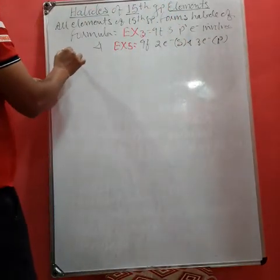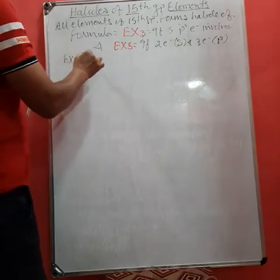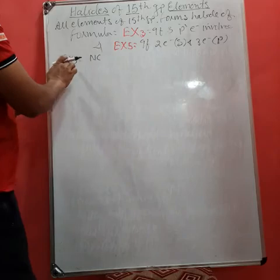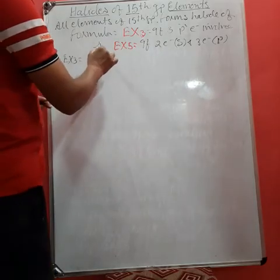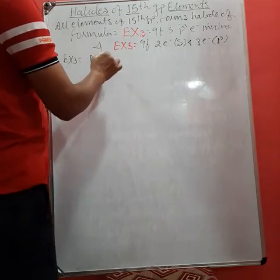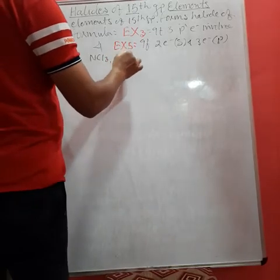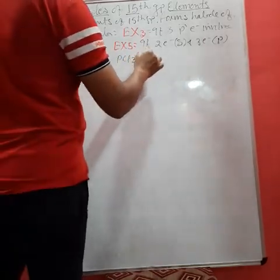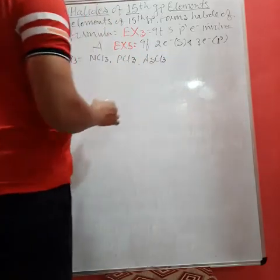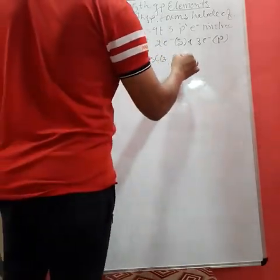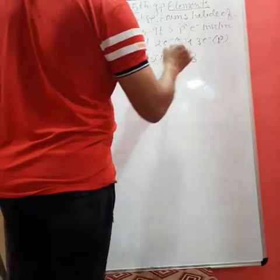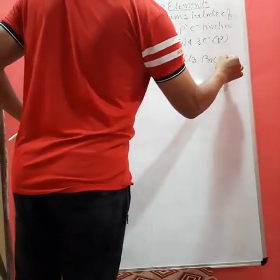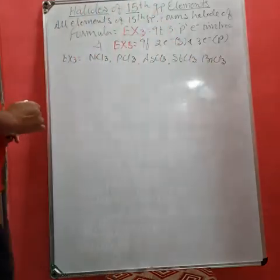Now, can you write here EX3? So EX3 will be nitrogen. And if I am converting X into any of the halogen, then it becomes NCl3, the next one will become PCl3, the next one will become AsCl3, the next one is SbCl3, and the last one is BiCl3.